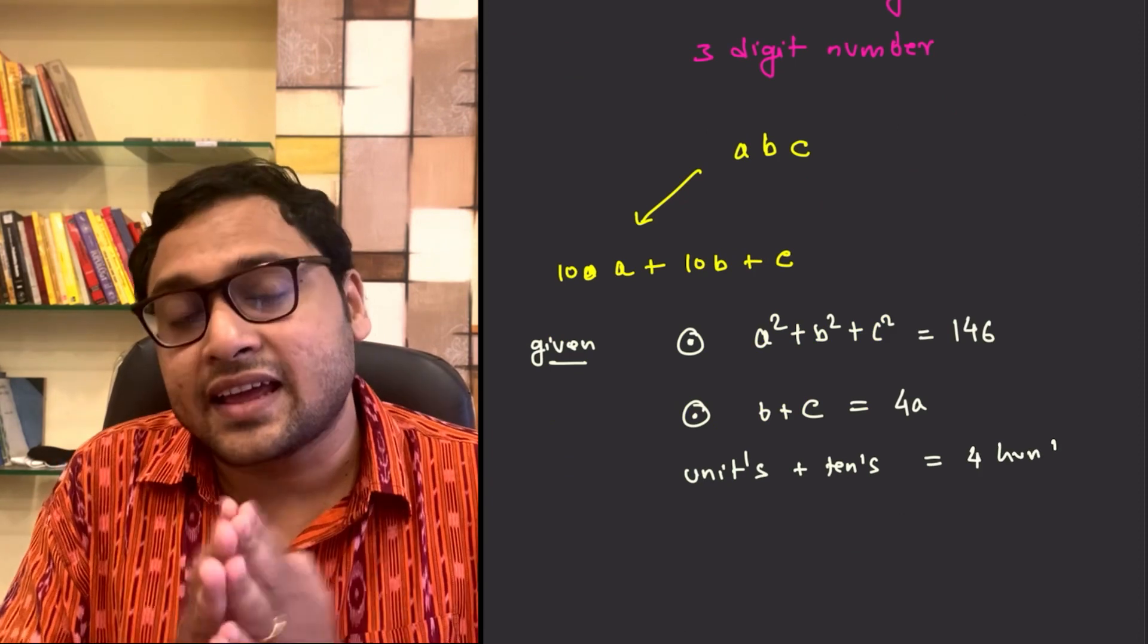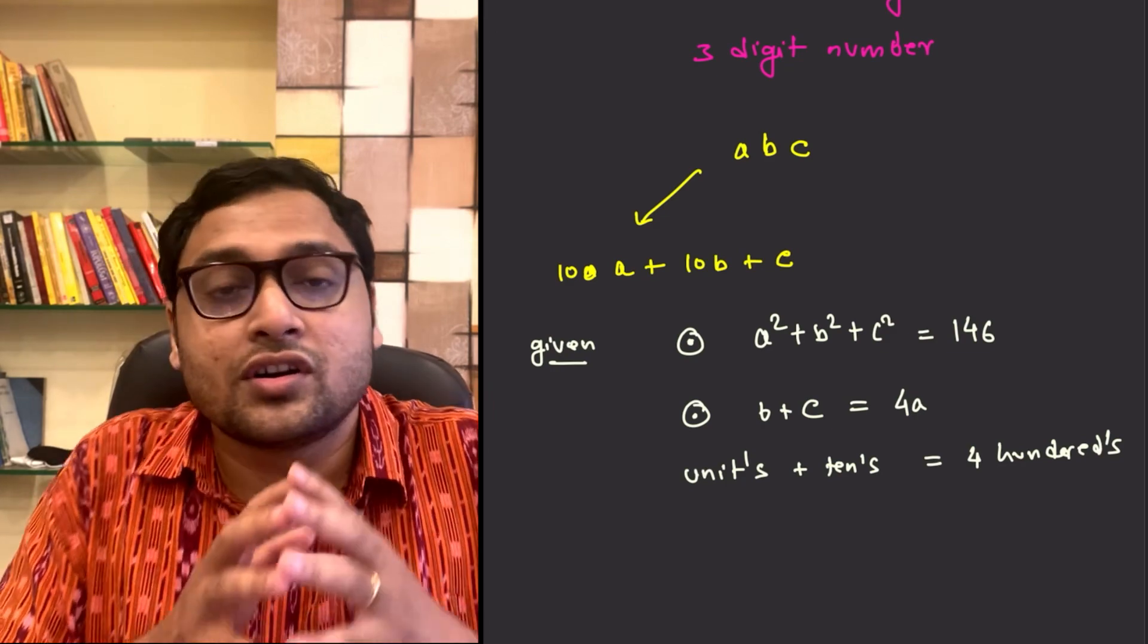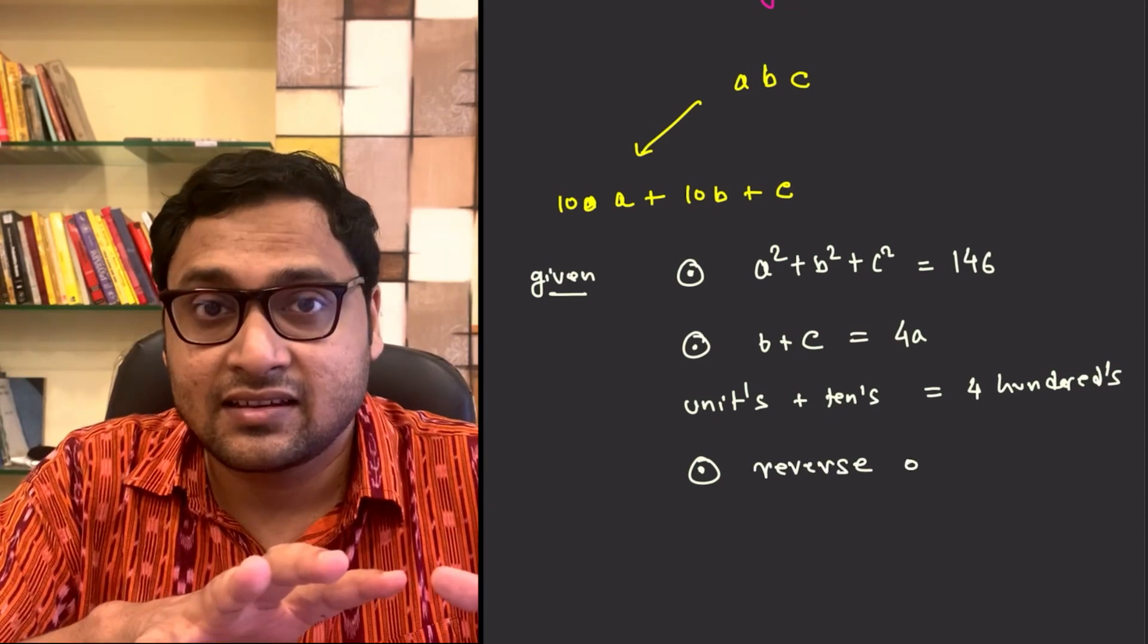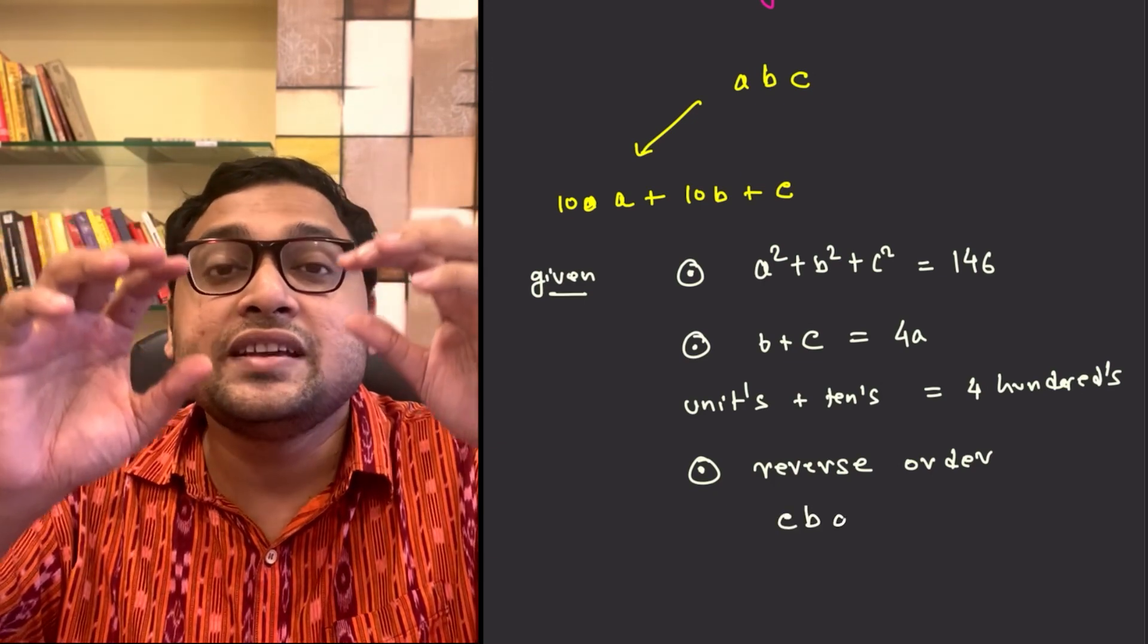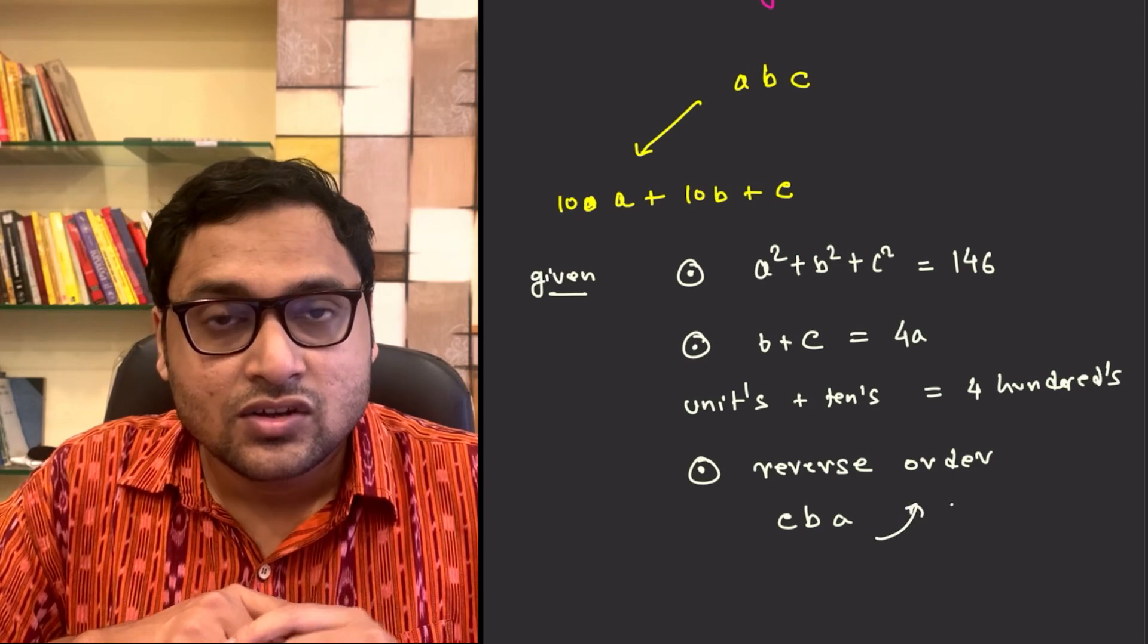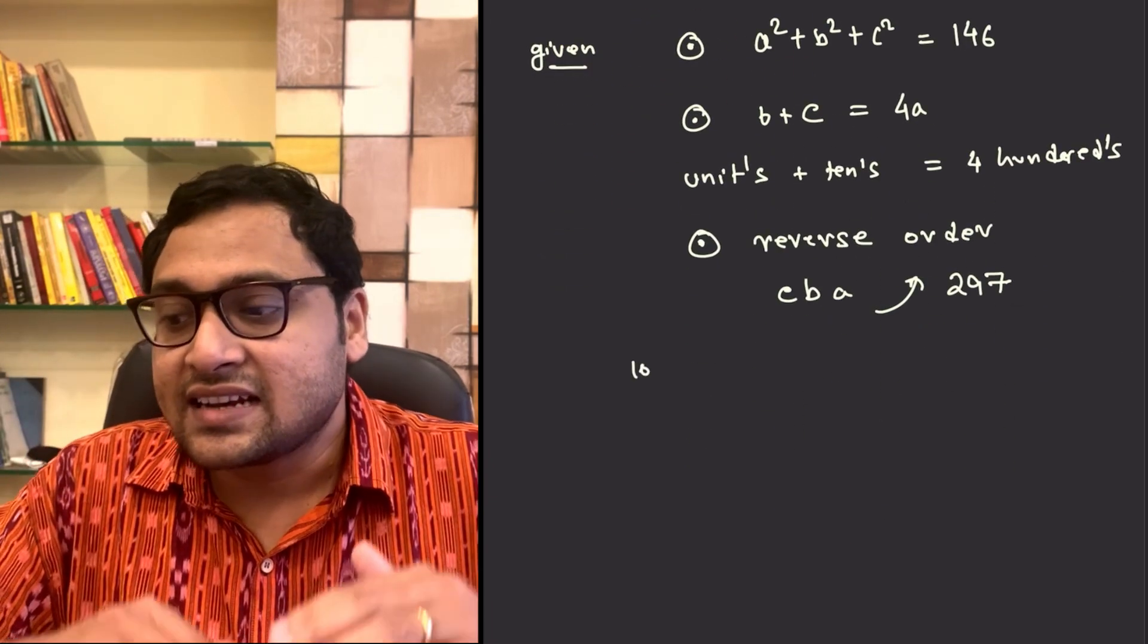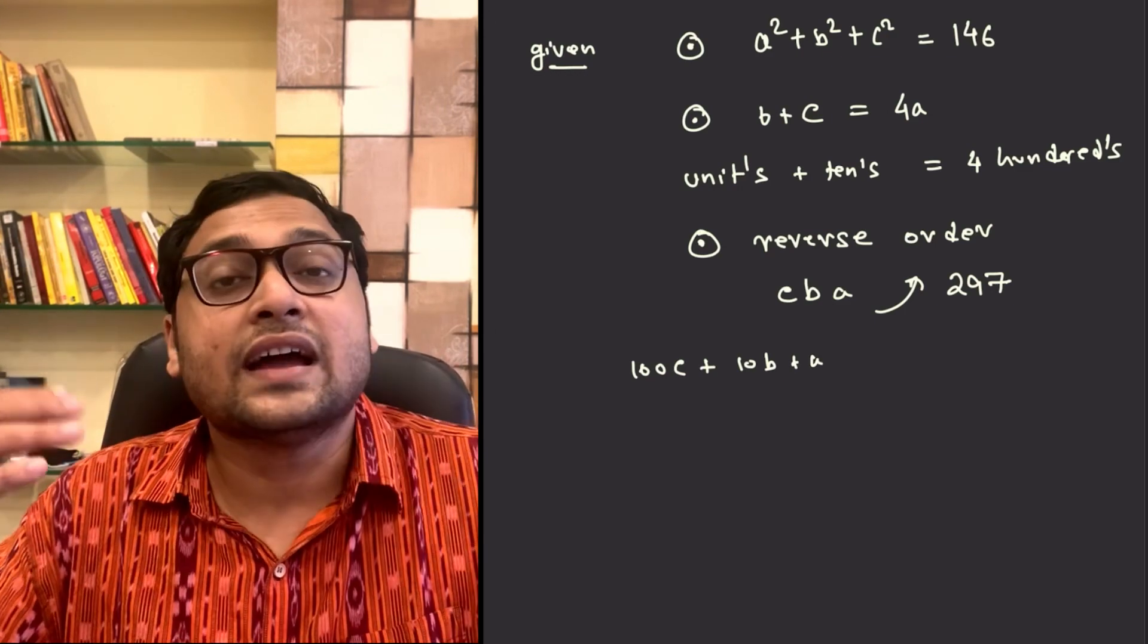And the third thing that is given is that if you reverse the order of the digits, you had ABC. Now, if you have CBA, then the value increases by 297. So, 100A plus 10B plus C is smaller than 100C plus 10B plus A, and it's smaller by 297.